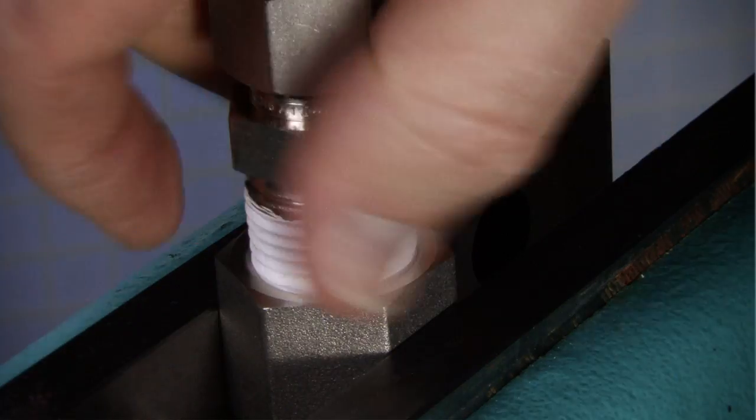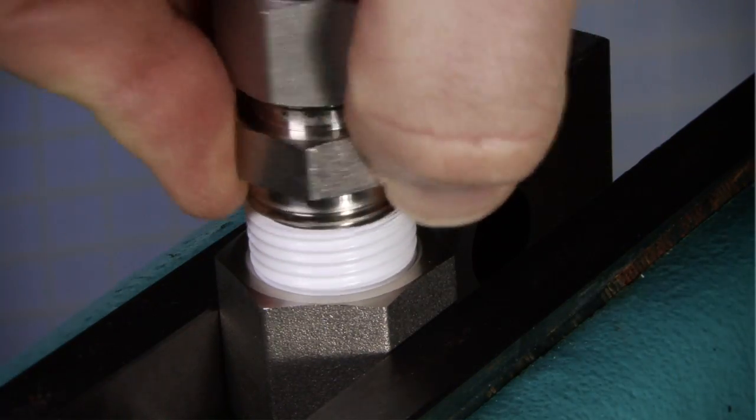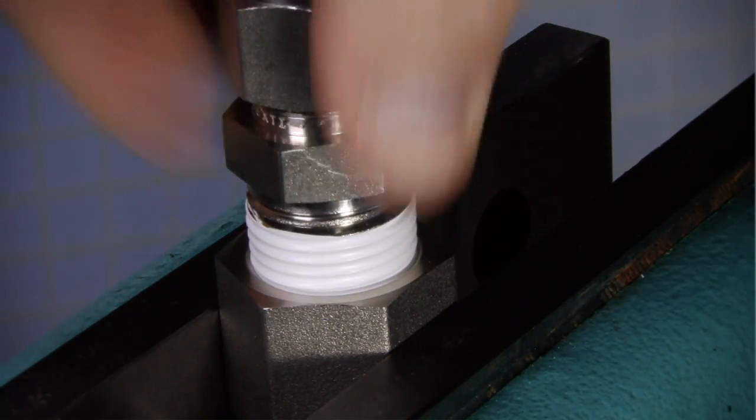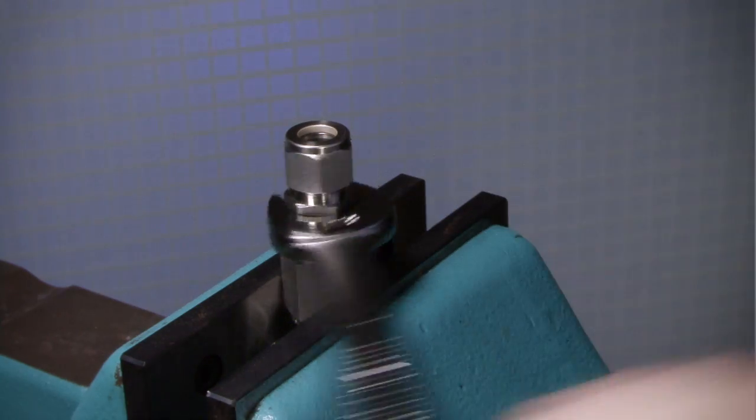Tighten the male end connection into the mating female end connection until finger tight. Then tighten the male end connection until wrench tight.